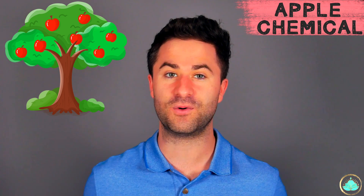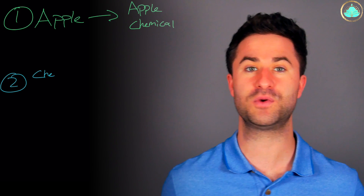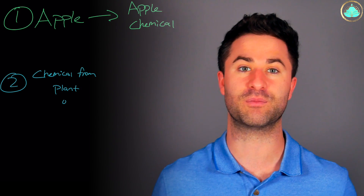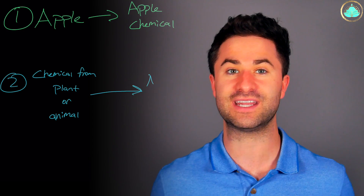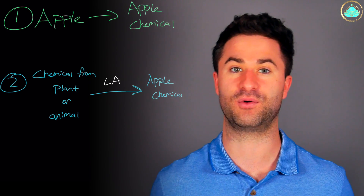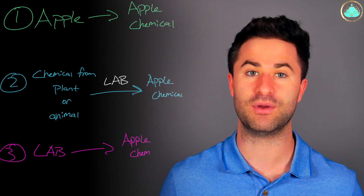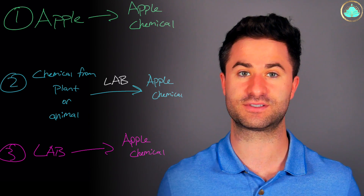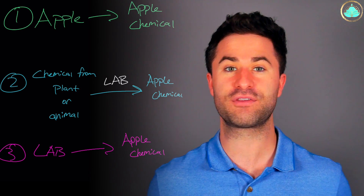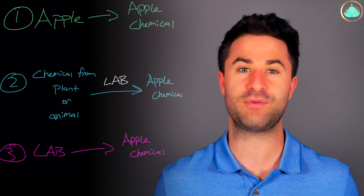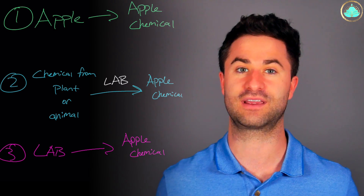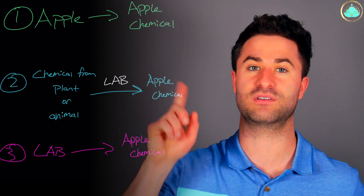This apple chemical has a specific molecular structure that can be replicated in one of three ways. Number one, you can get the apple chemical from the apple itself. Number two, you can get a different chemical from a plant or animal product, rearrange it in a lab, and then create the apple chemical that way. Or number three, you can synthesize the apple chemical from scratch in a lab using a combination of other chemicals. Notice that in all three instances, we have the same chemical no matter where it came from. Keep this fact in mind because it's important later on.